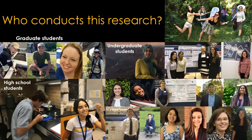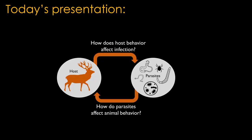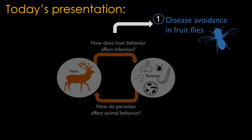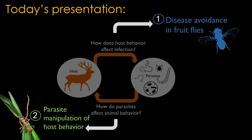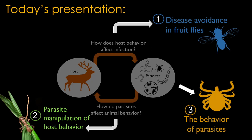Today I'll talk about three stories within this framework. The first story will be about disease avoidance using fruit flies, who I promise are more interesting than you think. I'll talk about parasite manipulation of host behavior, which is a really exciting and almost science fiction-like phenomenon. Then we'll finish by talking about the behavior of parasites, instead of the behavior of hosts.